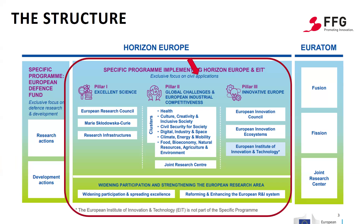It is important to emphasize that the funding here is focused exclusively on civil applications. The first pillar is entitled Excellent Science. The second pillar is dedicated to global challenges and European industrial competitiveness. This also includes the newly introduced EU missions and various European partnerships — meaning public-private partnerships, for example, between the European Commission and various industry associations. The third pillar is called Innovative Europe, focusing primarily on the economy, though scientific organizations can also participate. The last cross-sectional area is about strengthening the European research area.